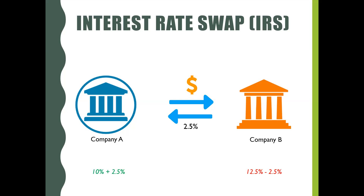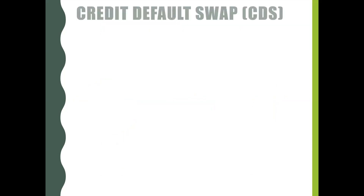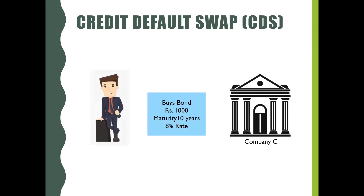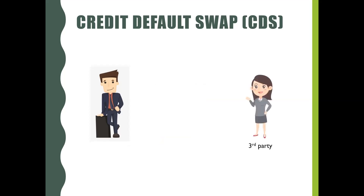Let's move to credit default swap. The credit default swap offers insurance in case of default by a borrower. Assume Alex has bought a 10-year 8% bond worth 1,000 rupees from company C. Alex is worried that company C may default on principal or interest payment in future, so Alex approaches Rita, a third party, to hedge against this risk by getting into a credit default swap contract.